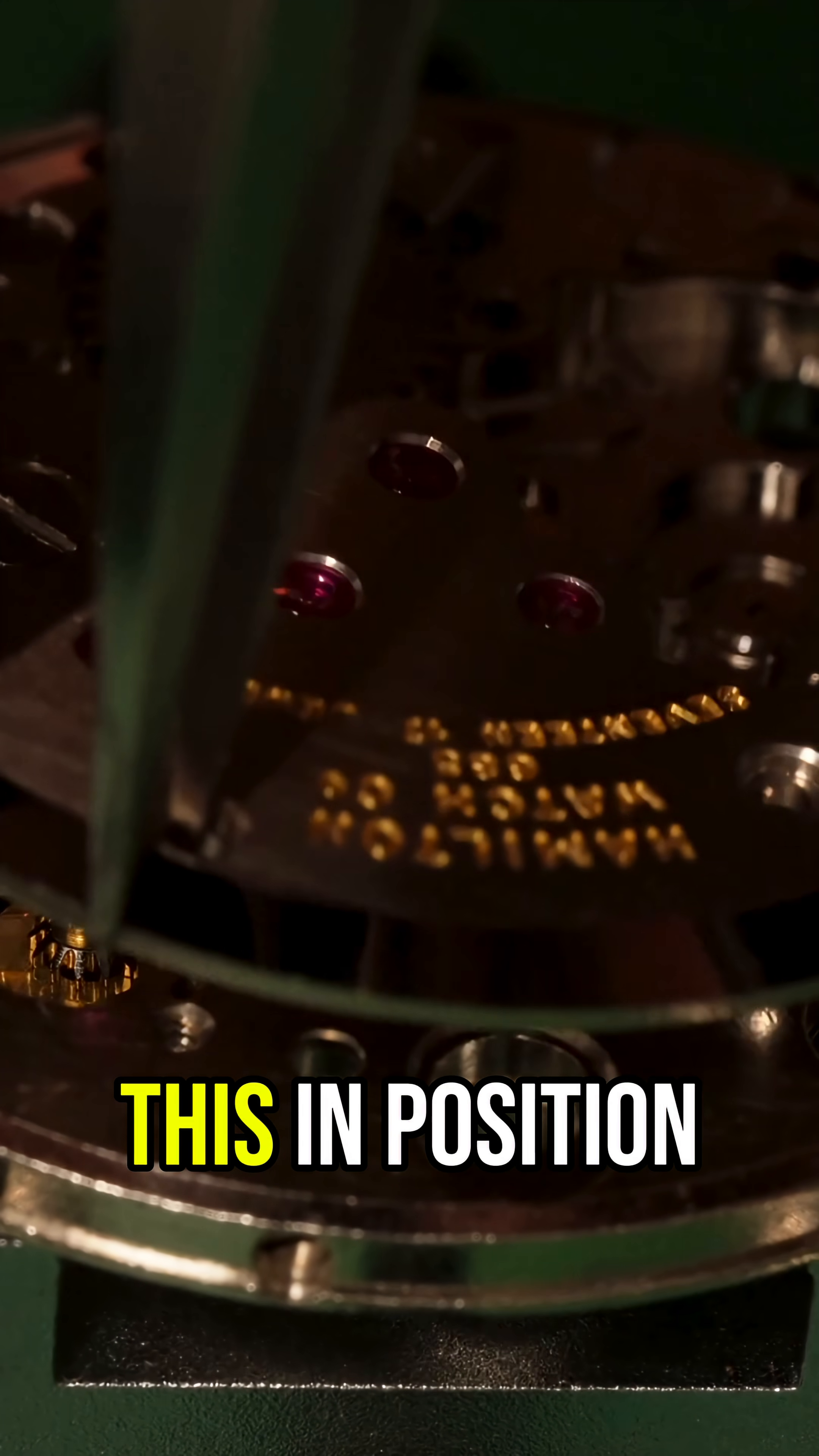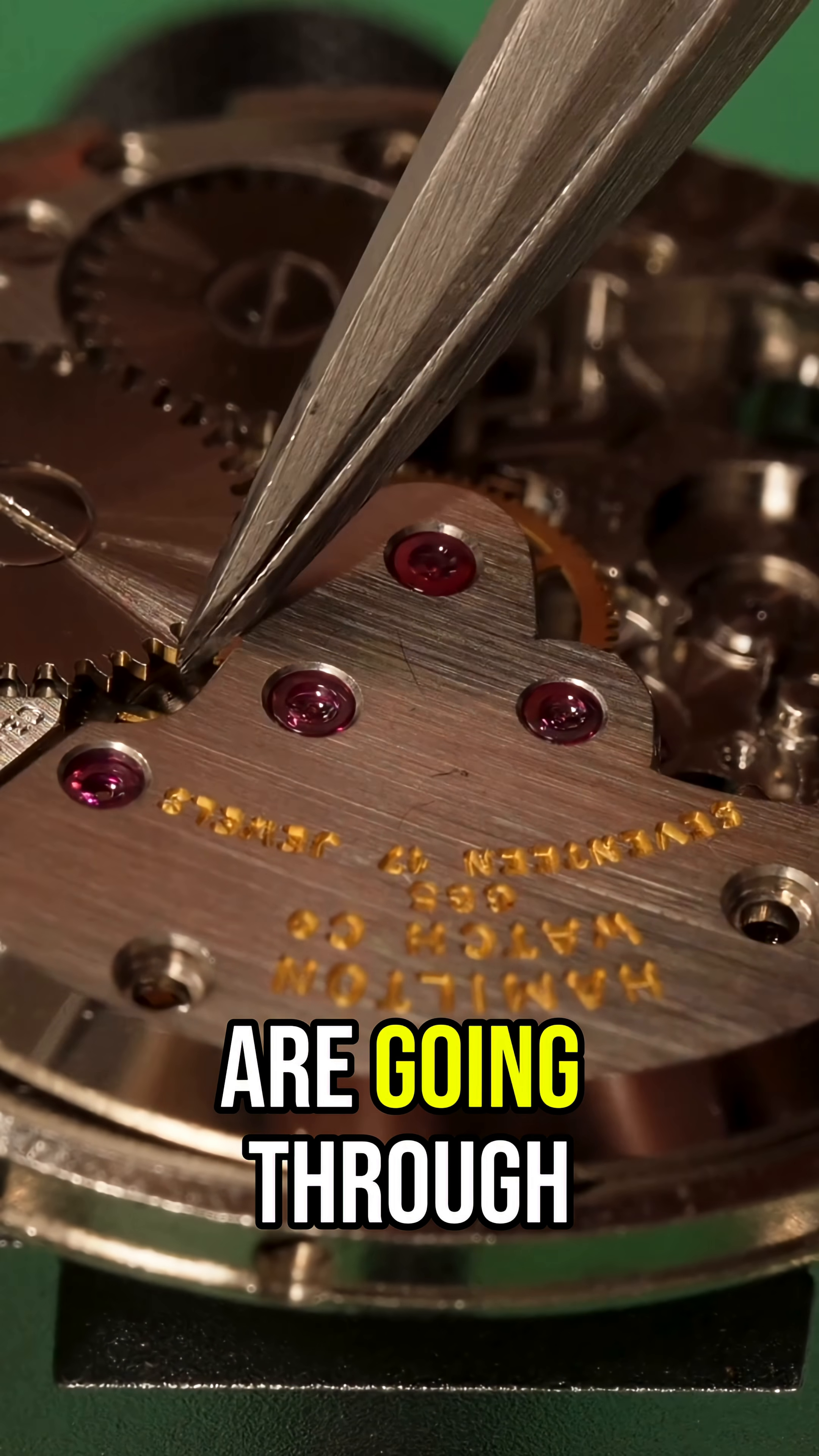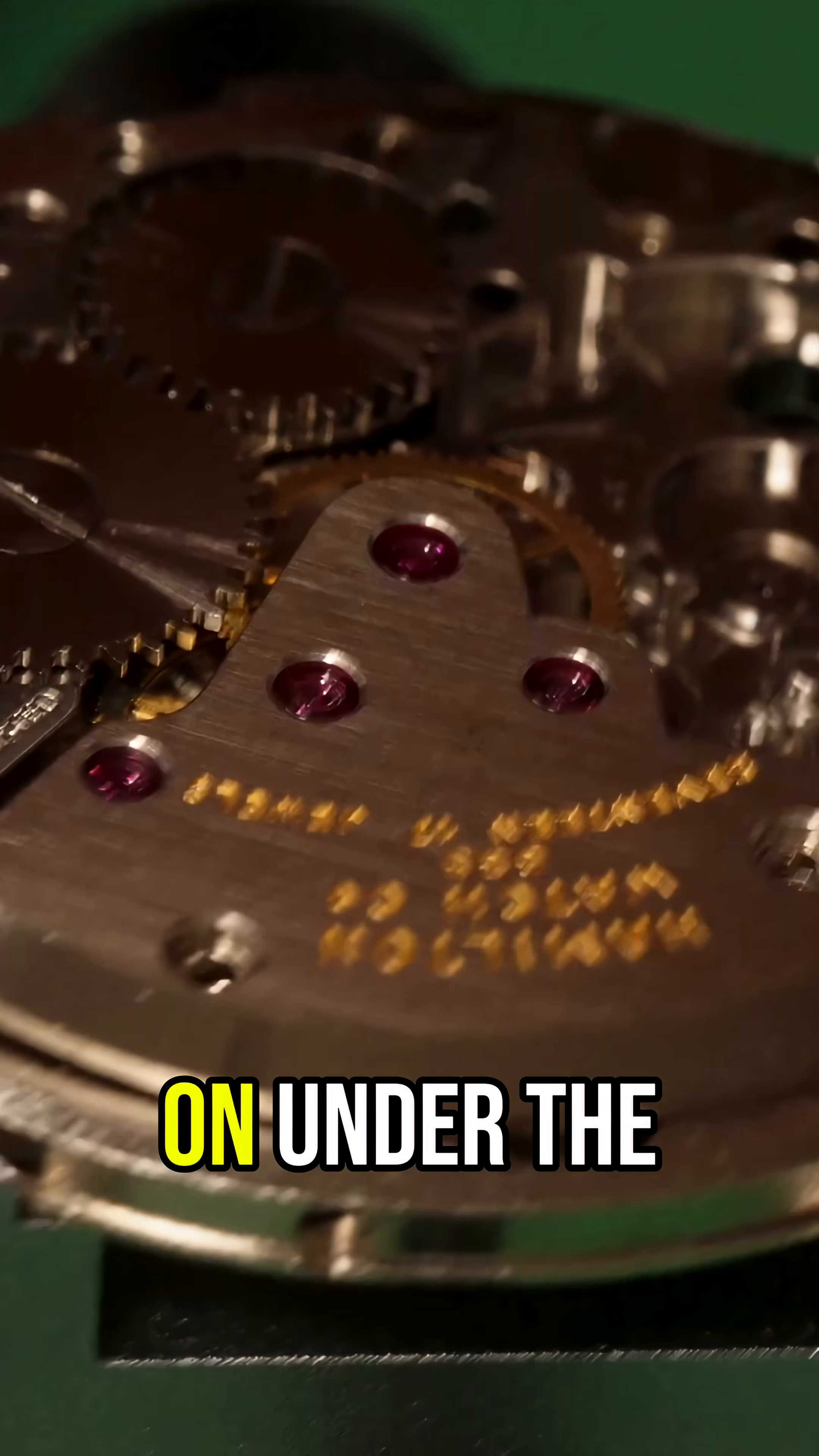And now to secure all of this in position we have the train of wheels bridge so all the pivots of the wheels we just installed are going through the jewel holes. We'll place it right on top and now let's check what's going on under the microscope.